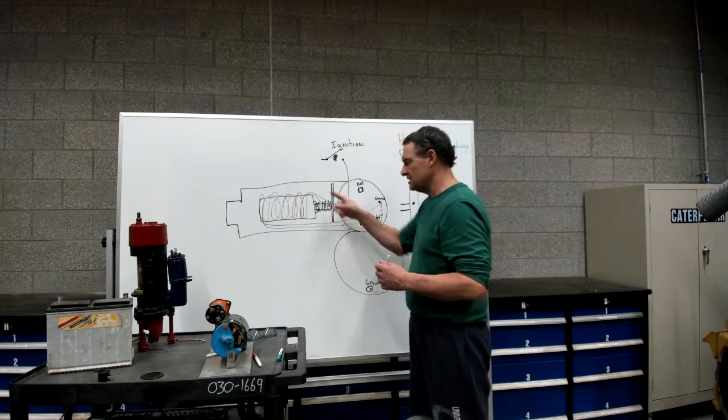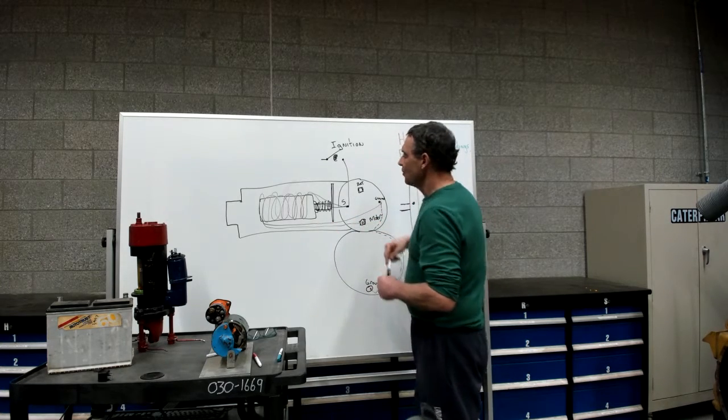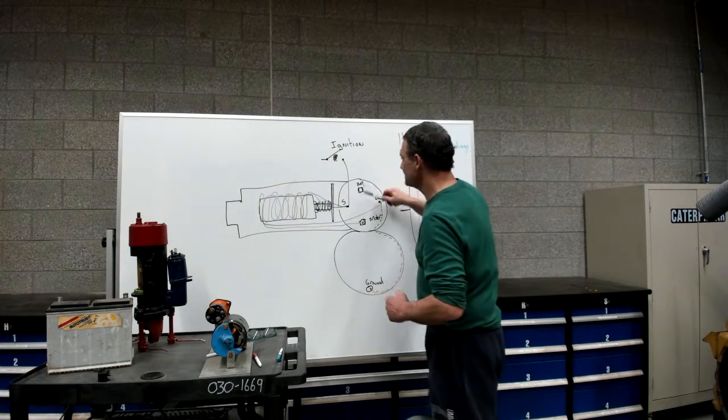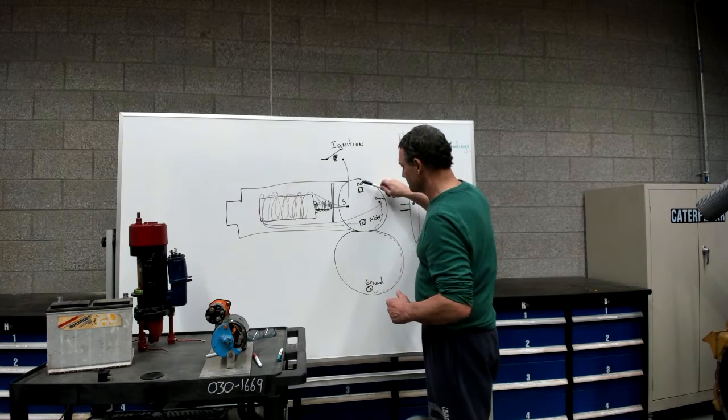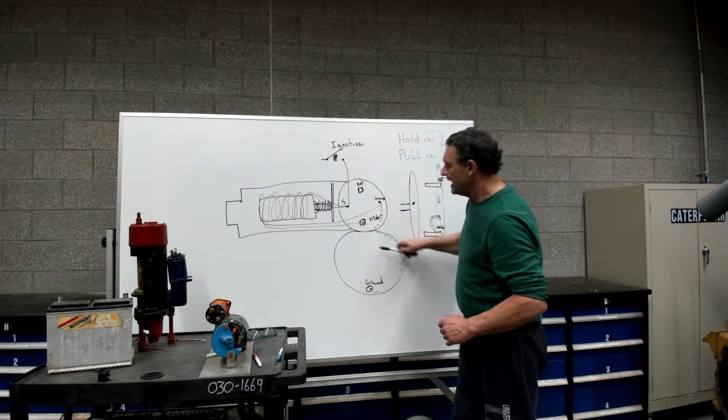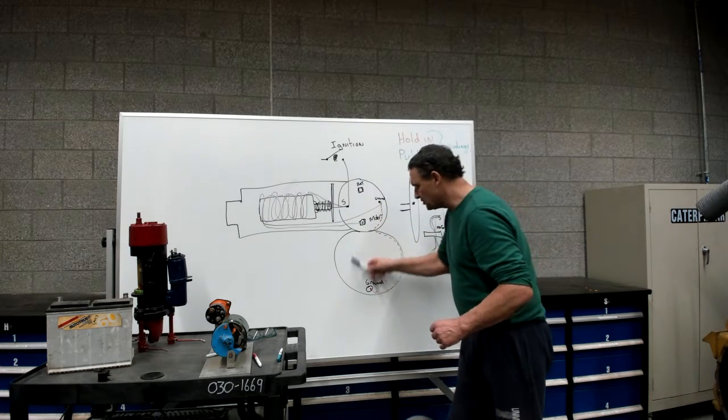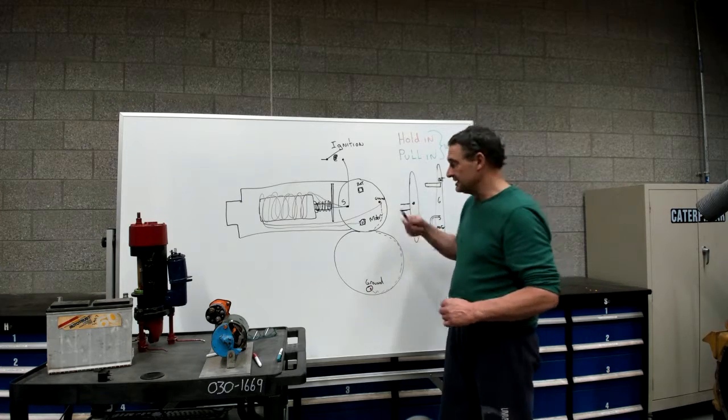So it takes a lot more amperage in these windings to pull it in than to keep it in or hold it. So once it pulls in, makes contact, full battery voltage is going to go through this battery terminal, through the contact disc, through the motor terminal and supply power, there's a connection between here and here, to the starter motor and it's going to begin to spin.